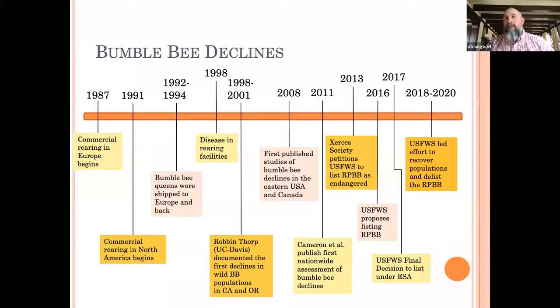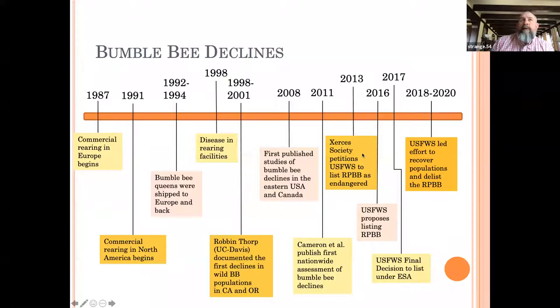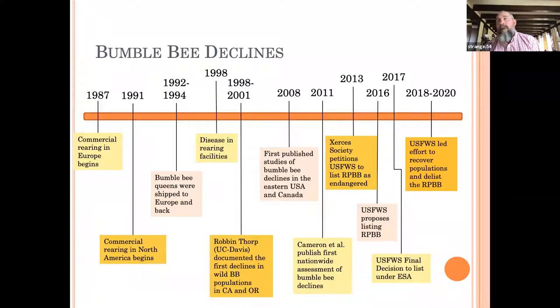Along with that study we looked at pathogen levels and the prevalence of Nosema bombi in wild populations, showing a strong correlation between declining species and this pathogen — Nosema seemed to really be playing a part. In 2013, the Xerces Society for Invertebrate Conservation petitioned the US Fish and Wildlife Service to list rusty patch bumblebee as endangered, along with several other petitions for other bumblebees. These sat for a few years, and through various litigation, Fish and Wildlife Service proposed to list rusty patch bumblebee in 2016.